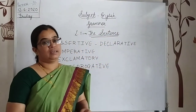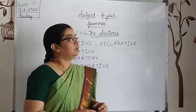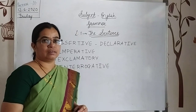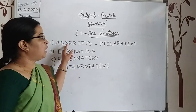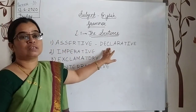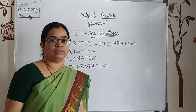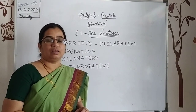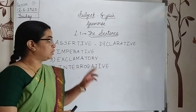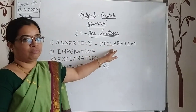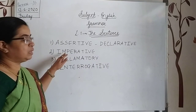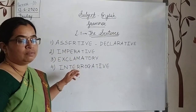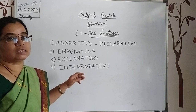Now we will see the types of sentences. There are four types. The first type is the assertive or declarative sentence — this is also called a statement. The second type is the imperative sentence, which expresses advice, commands, or requests.